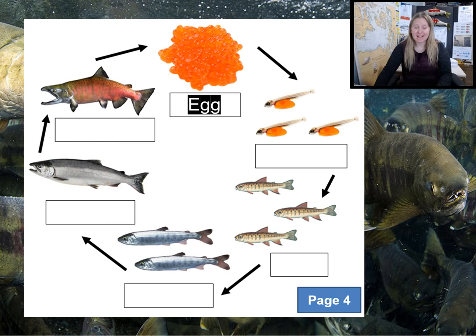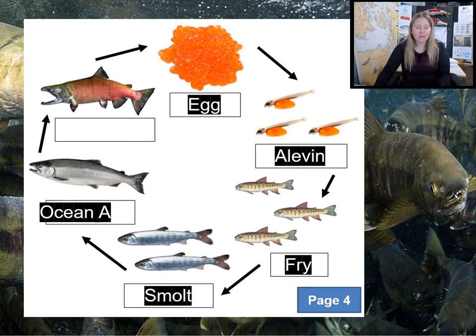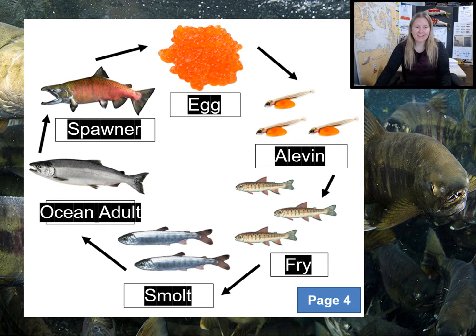Salmon start their lives in fresh water as eggs — E-G-G. They then hatch into alevin — A-L-E-V-I-N. When they absorb their yolk sac, they are now fry — F-R-Y. When they leave the river and swim to the estuary, they're smolts — S-M-O-L-T. Then they swim to the Pacific Ocean and grow big as ocean adults — O-C-E-A-N A-D-U-L-T. Then finally they return to the stream where they were born as spawners — S-P-A-W-N-E-R. They'll lay more eggs and the cycle will begin again.